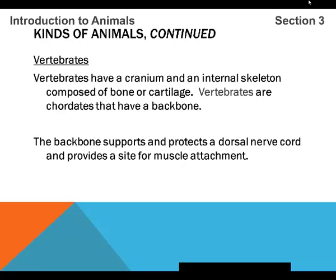Vertebrates. Vertebrates have a cranium and an internal skeleton composed of bone or cartilage. Vertebrates are chordates that have a backbone. The backbone supports and protects a dorsal nerve cord — dorsal being the top side. It also provides a site for muscle attachment, so many of the muscles on your body are attached to your backbone, and the nerve endings coming off your backbone are attached to those muscles, allowing communication between your brain and muscle cells throughout your body.